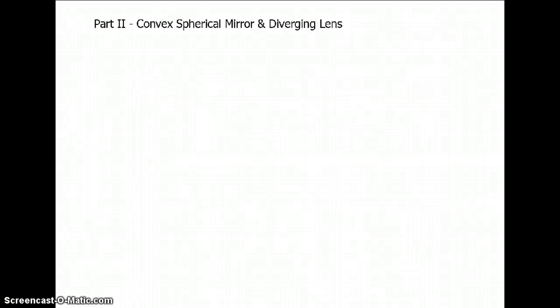This is part 2, the convex spherical mirror and the diverging lens. I'm going to group these guys together because they're basically cousins. If you understand one, then you understand the other. What makes them similar is that they both share a negative focal length.